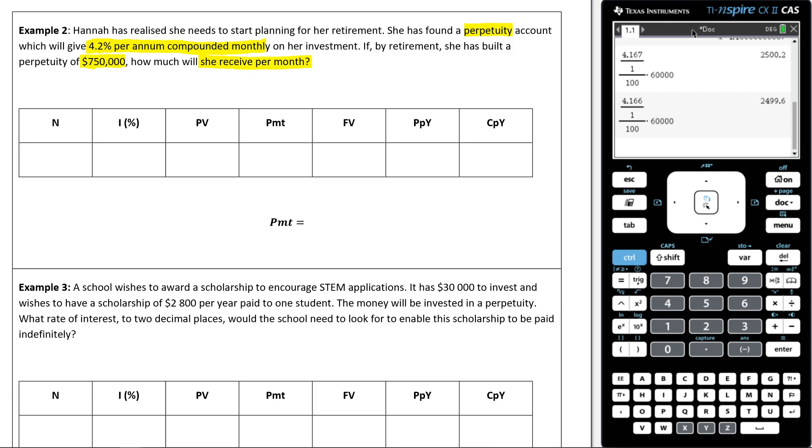First things first, figure out what you don't know. I don't know how much we're going to receive per month. That means I don't know what the PMT is. What do I know? Well, I know I'm dealing with a perpetuity. So that means n is equal to one. And remember, that's just convention. We could really make it whatever we want, but it's just easier to make it one.